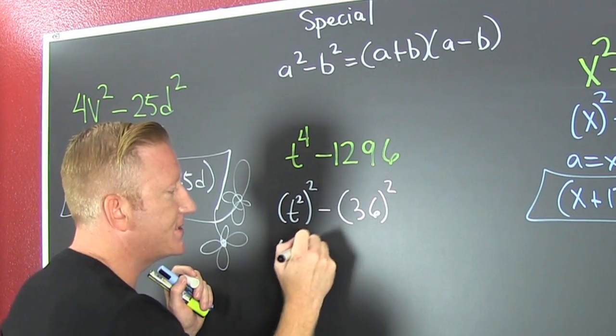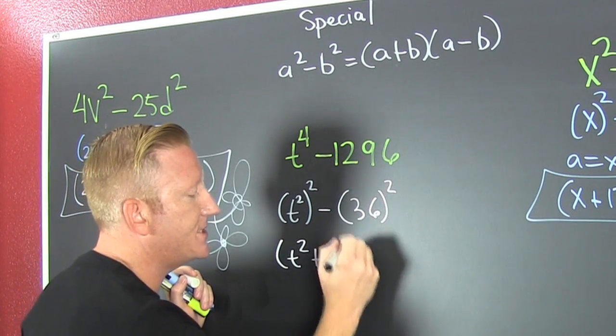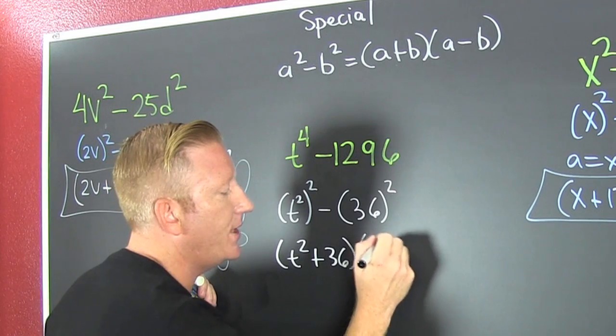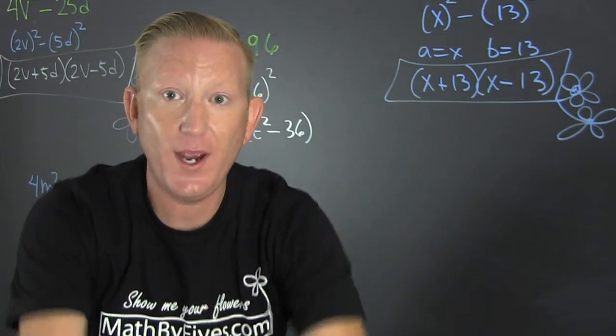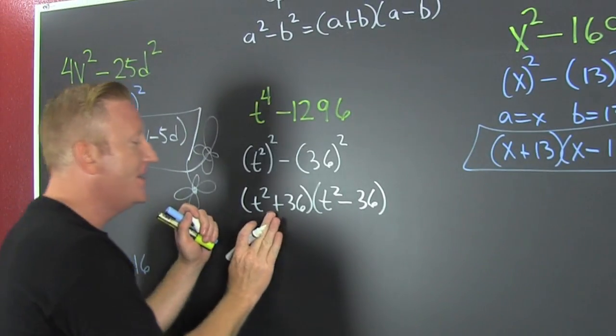So then I see that I have the difference of two squares. So that's t squared plus 36 times t squared minus 36. But wait, there's more! If you act now, you see an additional difference of squares.